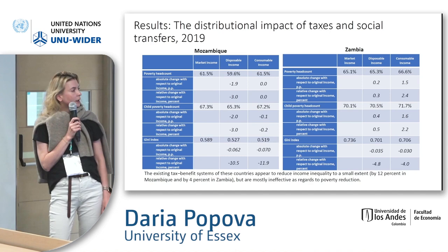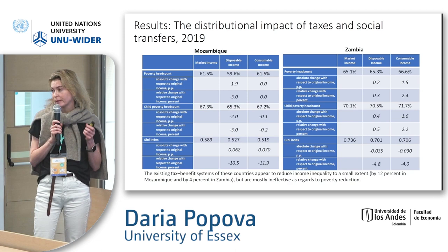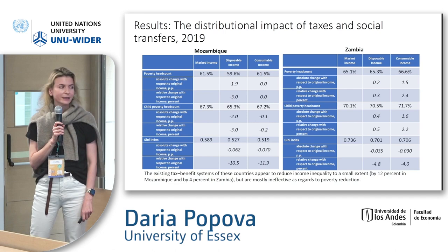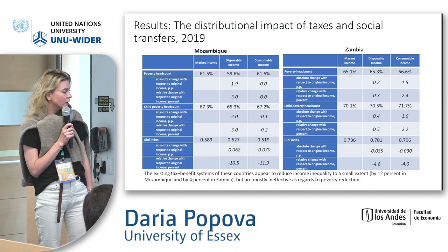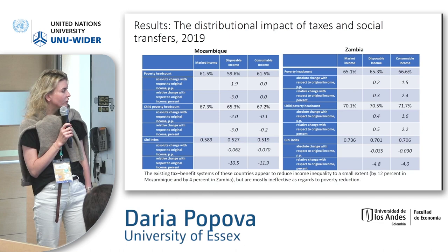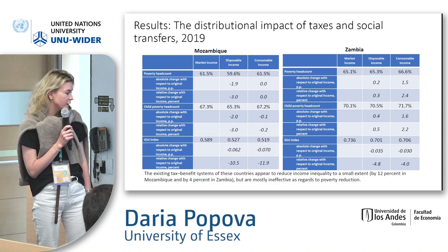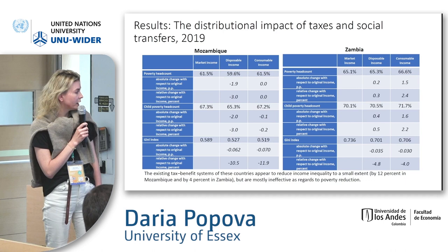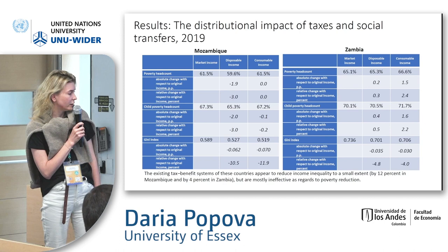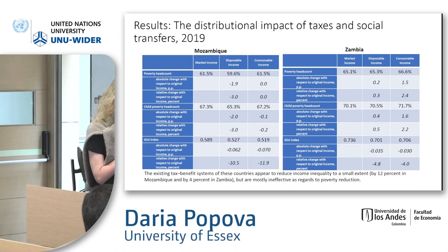This picture shows the status quo — the distributional impact of taxes and social transfers in 2019 in these two countries. As we can see, the existing systems reduce income inequality to some extent: 12% in Mozambique and 4% in Zambia. But in general they are not effective at poverty reduction due to the lack of social transfers. For Mozambique there are basically no changes in poverty headcounts, and for Zambia we can see even an increase in poverty headcounts due to the impact of indirect taxes.